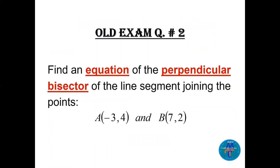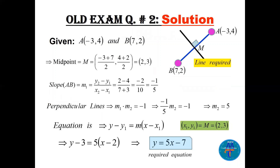Question number 2: find an equation of the perpendicular bisector of the line segment joining A(−3, 4) and B(7, 2). The perpendicular bisector is the line perpendicular to segment AB and also bisects it, meaning it passes through the midpoint. That's the little trick — bisector means bisection.